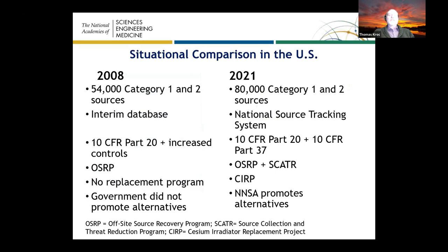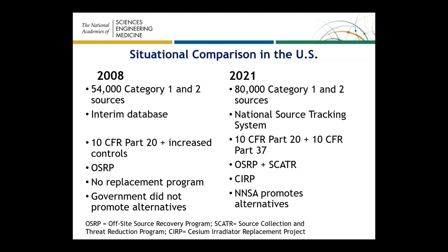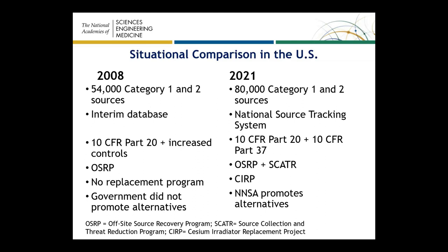Comparing the status of radioactive source use between the previous study and now: at that time there were about 54,000 category one and two sources tracked in an interim database; now there is a national source tracking system that identifies over 80,000 category one and two sources. Some additional regulations were implemented over that time, including 10 CFR Part 37, and we added the source collection and threat reduction program in addition to the off-site source recovery program.